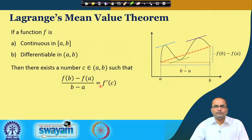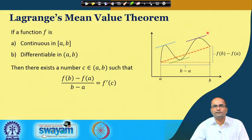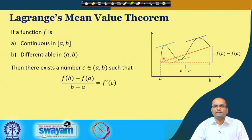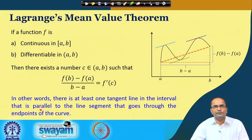This theorem says that the slope of the secant equals f'(c) for some point c in the domain. The geometrical meaning is that there will be at least one tangent parallel to the line segment joining the endpoints of the curve. In other words, there is at least one tangent in this interval that is parallel to the line segment through the endpoints of the curve.